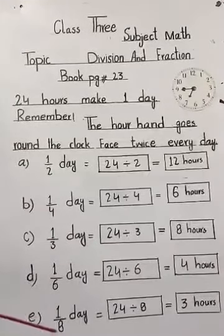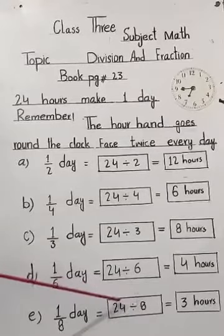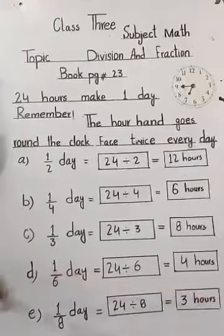E, 1 over 8 days. 24 divided by 8. 8 threes are 24, 3 hours. Thank you.